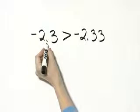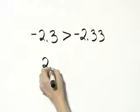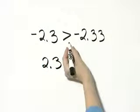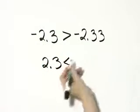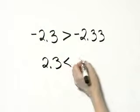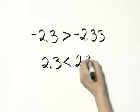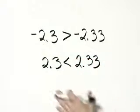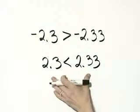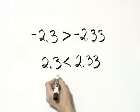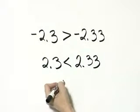If I divide this by negative 1, I would have 2 and 3 tenths. Remember if I divide by negative, that would be less than, and if I divide this by negative 1, I'd have 2 and 33 hundredths. Now you're comparing positive numbers and you can compare decimal place by decimal place.